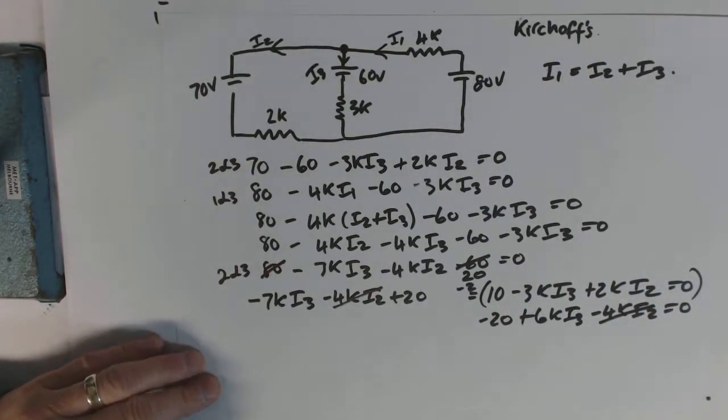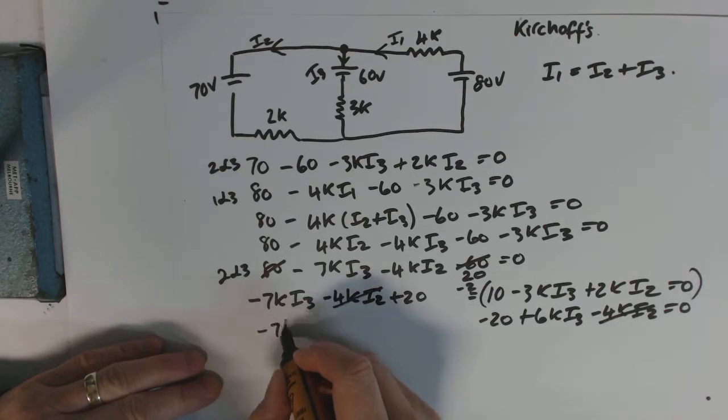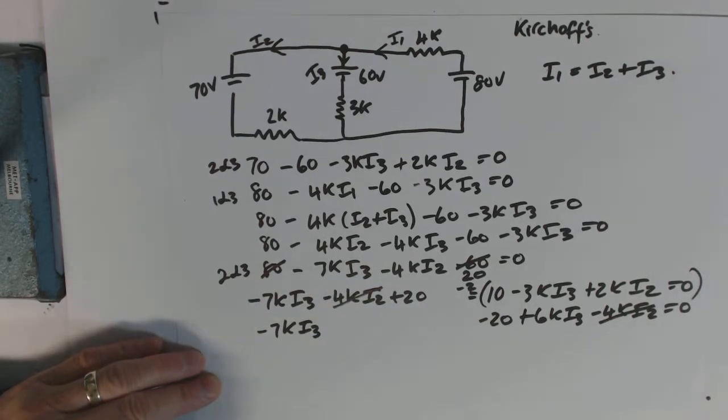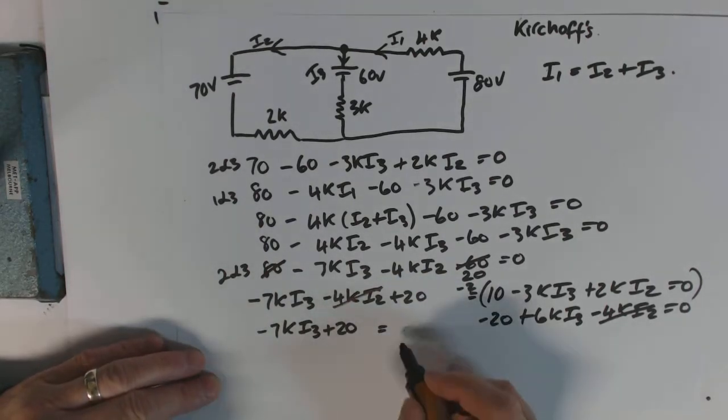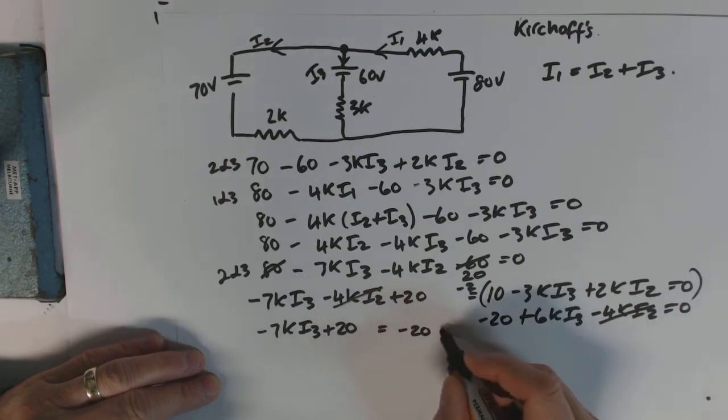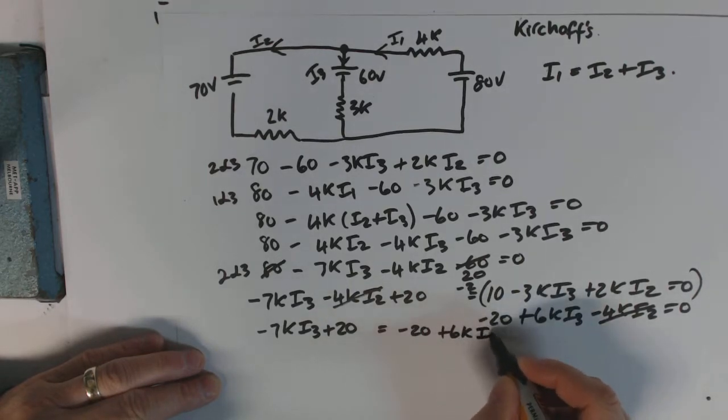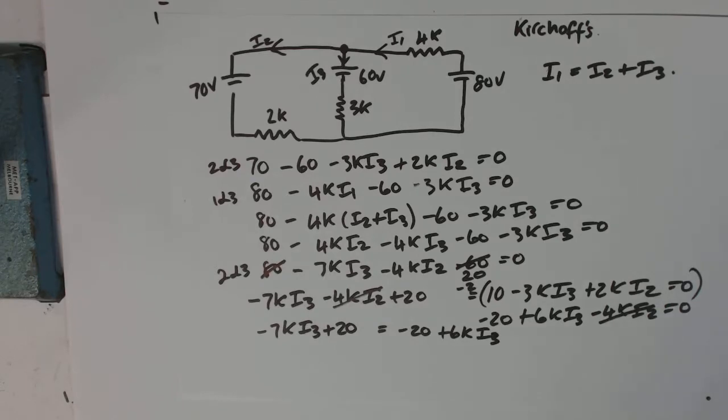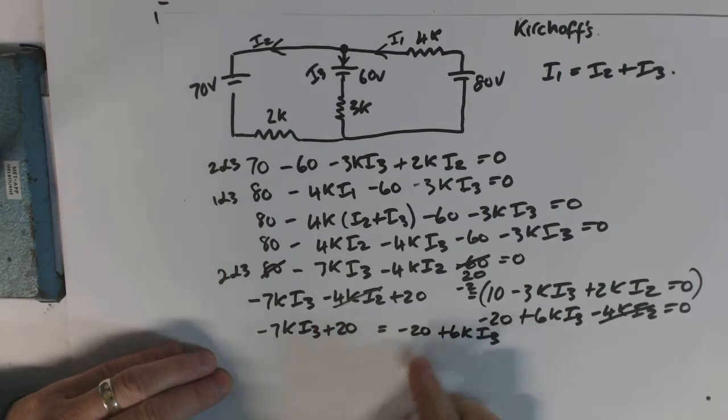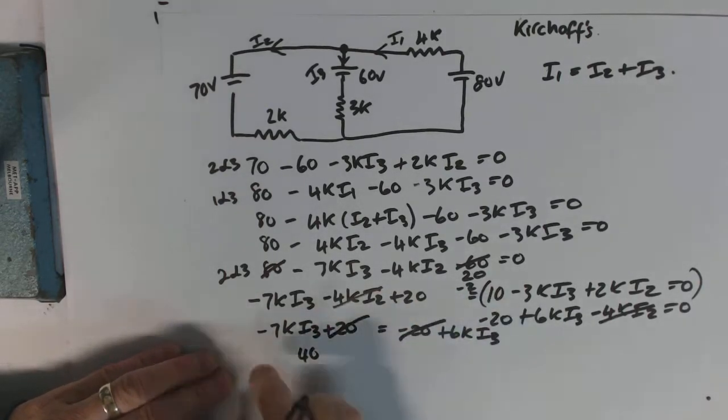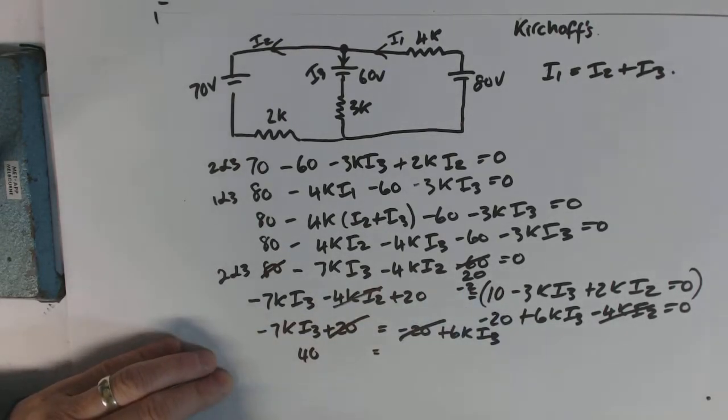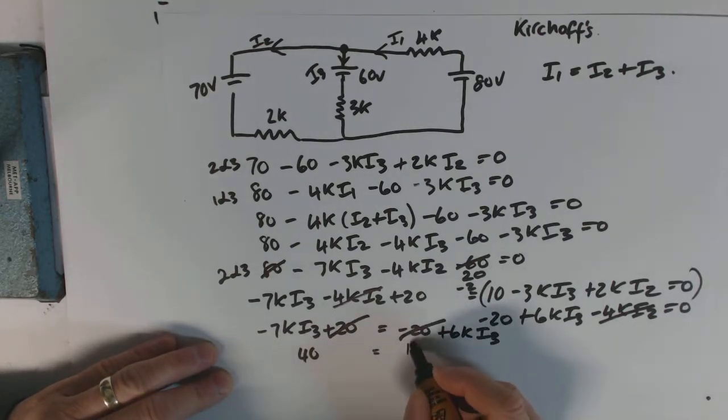So what we've got is minus 7k I3 plus 20 is equal to minus 20 plus 6k I3. So where's that got us to? All right, so if we add, well what we do, we'll bring the 20 over that side, so we've got 40. But the 7k I3 on that side is equal to 13k I3. 7k I3 and 6k I3, 13k. Now if we divide both sides by 13k, we should have I3.